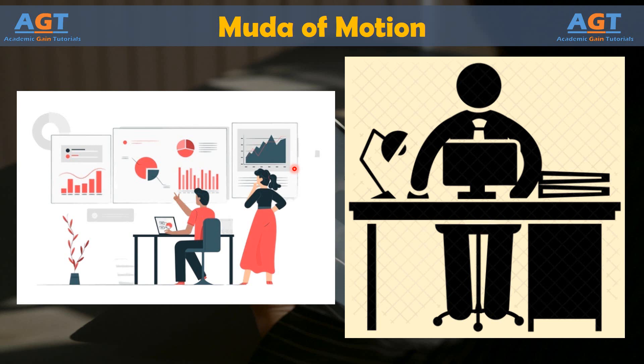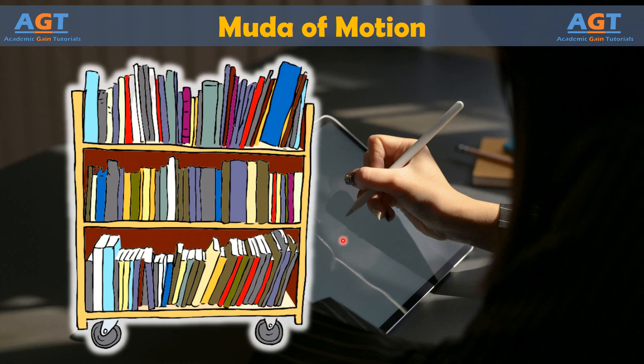Other examples of muda of motion include a task that requires an individual to physically move back and forth between work, extra motion that stems from a poor layout of work, or movement that occurs when an employee leaves an area and has to return one or more times because he or she forgot something.